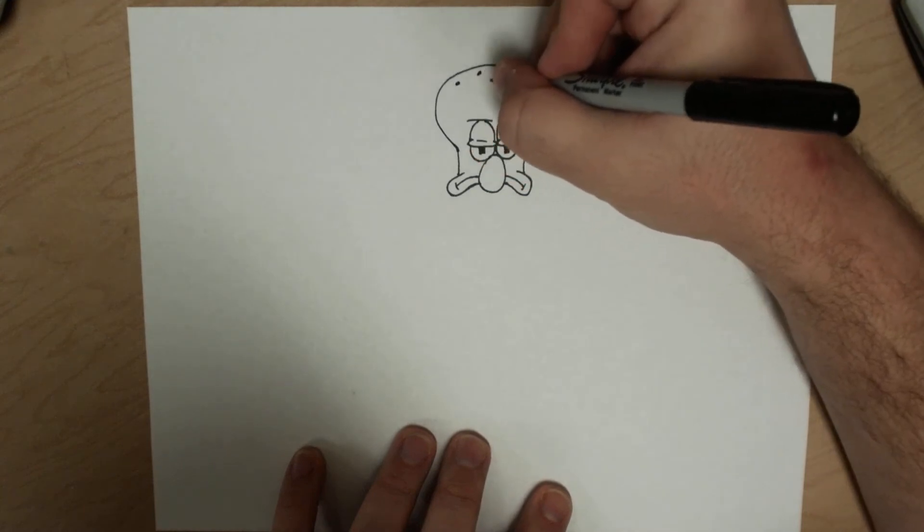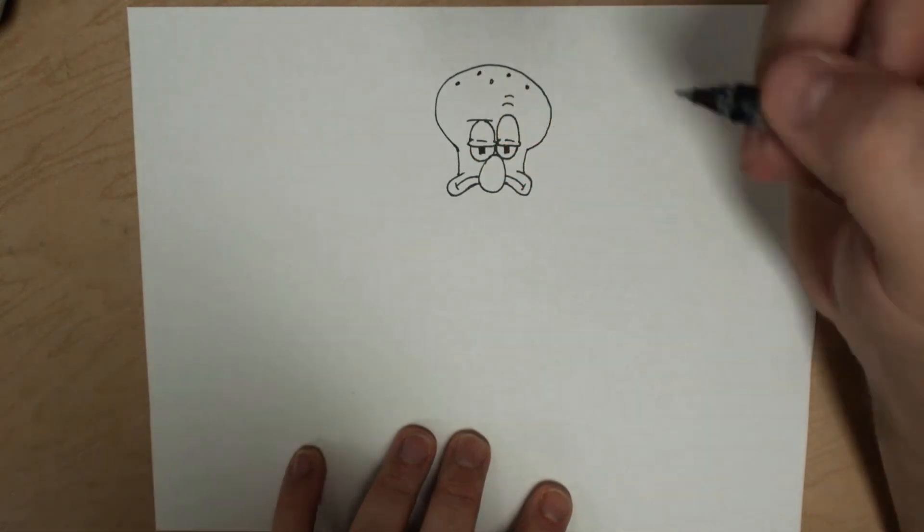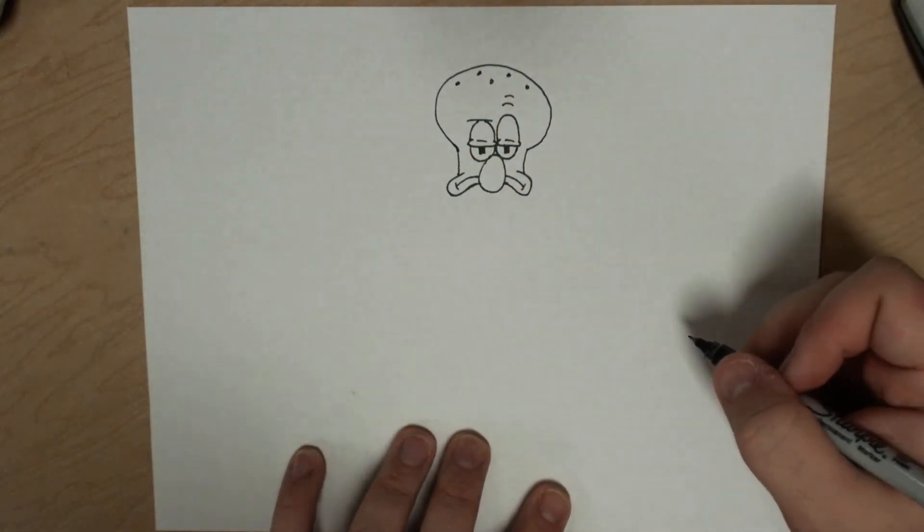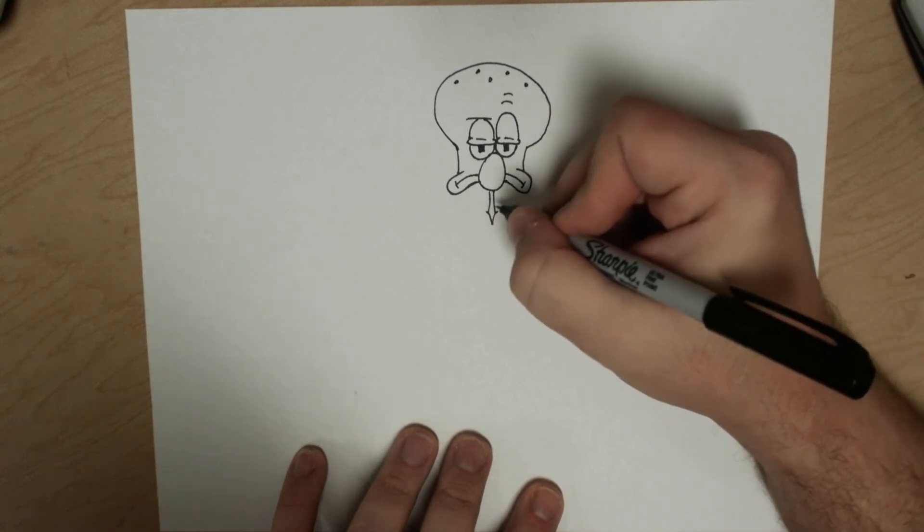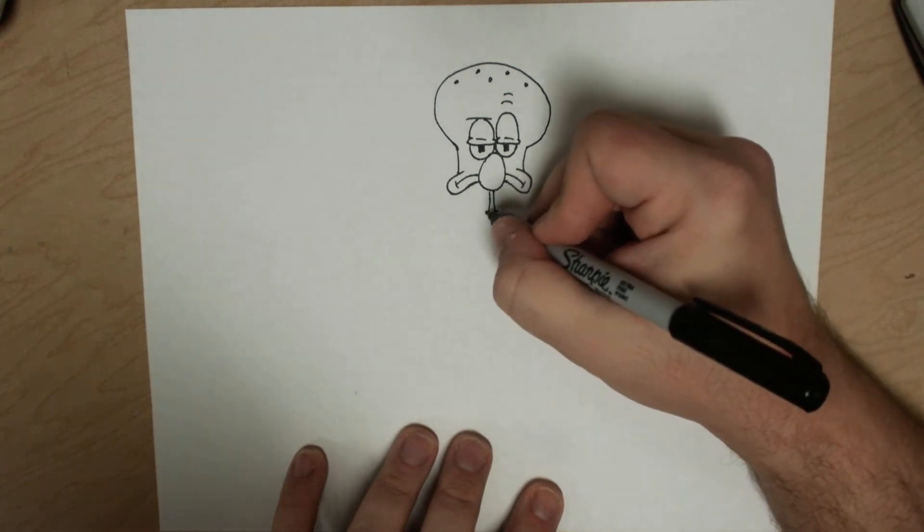A couple of lines over the top. Just get this side of the face. And like I said, if I'm going too fast, you can always pause the video. Trying to make sure my camera is not going to stop on me like it did the first time I tried this.